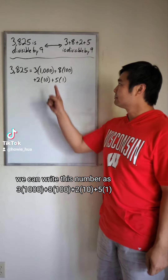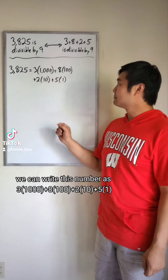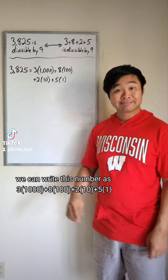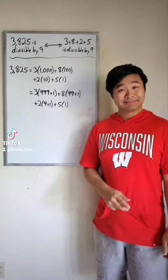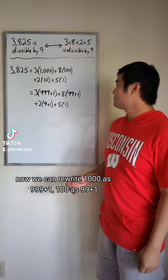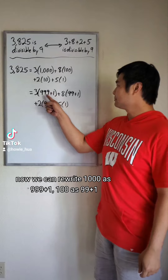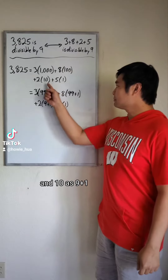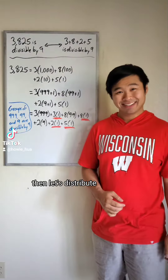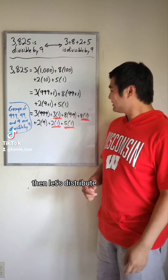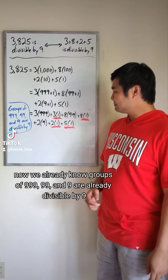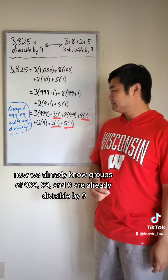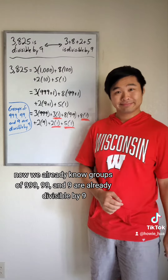We can write this number as 3 1,000s plus 8 100s plus 2 10s plus 5 1s. Now, we can rewrite 1,000 as 999 plus 1, 100 as 99 plus 1, and 10 as 9 plus 1. Then, let's distribute. We already know groups of 999, 99, and 9 are already divisible by 9.